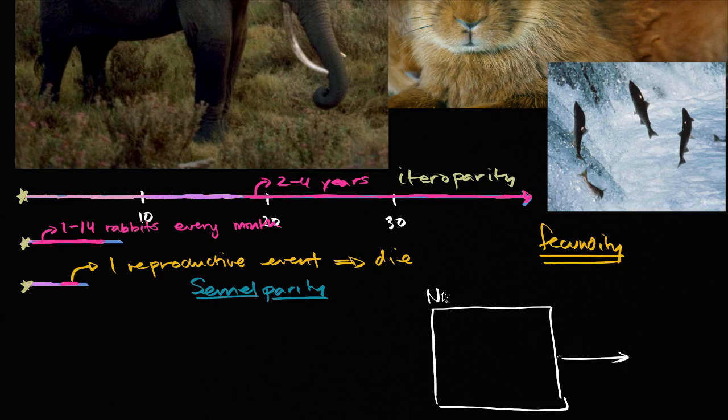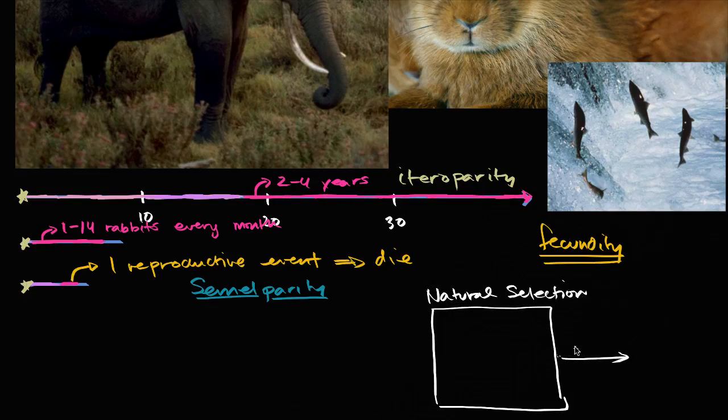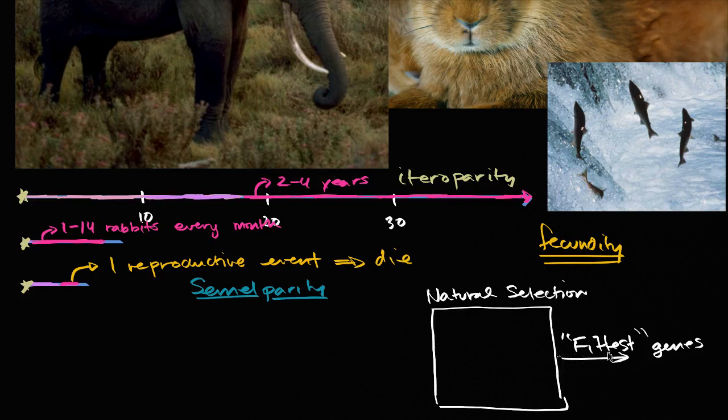So, let's call this box natural selection. And so, what you have coming out of this is the fittest genes. And when we talk about fittest genes, we're not talking about somehow that some are better than others, we're just saying for that environment, the ones that seem, the genes that produce the traits that are most suitable to survival and most suitable towards reproduction.